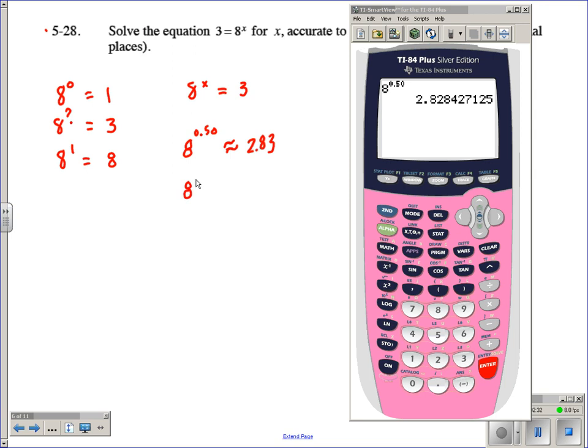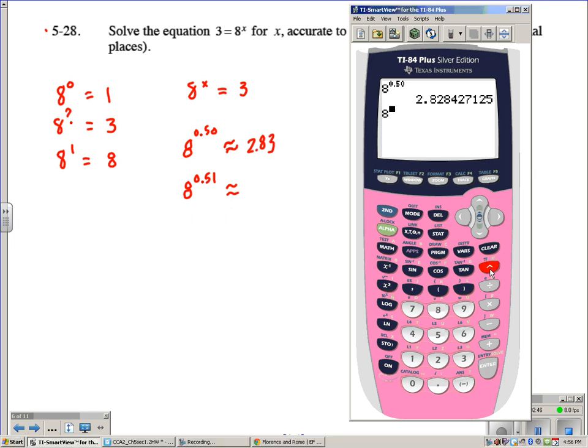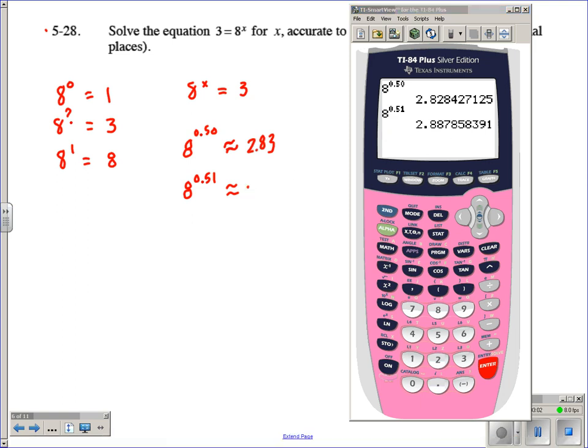Let's go ahead then and say, alright, 8 to the power of, let's say, 51 hundredths. This will probably be an approximation as well. So let's do 8 raised to the power of 0.51. We got a little bit closer there. This one's approximately 2.887, so let's round that to 2.89.